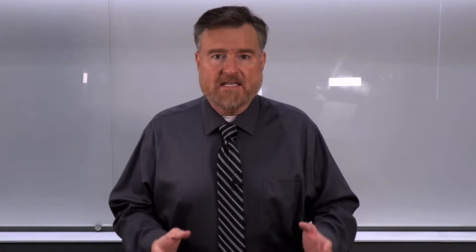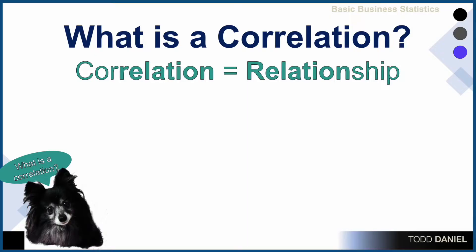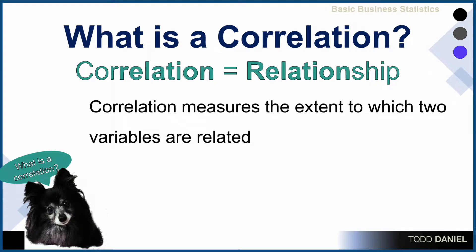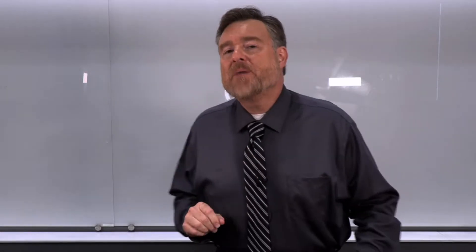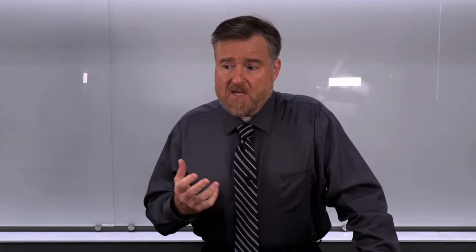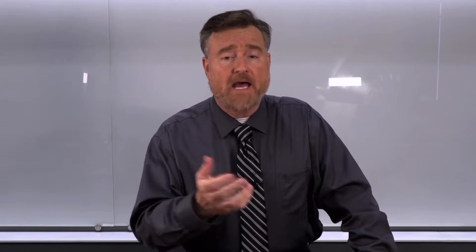Let's start with a definition. Correlation, as you can see in the name, is about relationships. Correlation measures the extent to which two variables are related to each other. What does it mean for two variables to be related to one another? Probably the best way of thinking about this is to use an example of what it is like to be in a relationship with another human being.